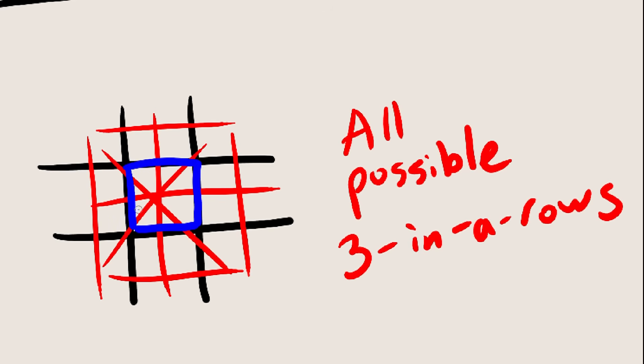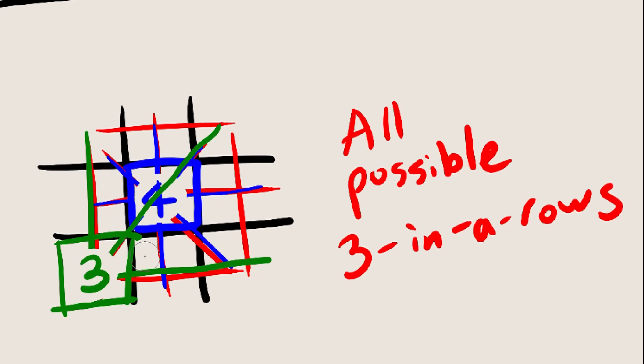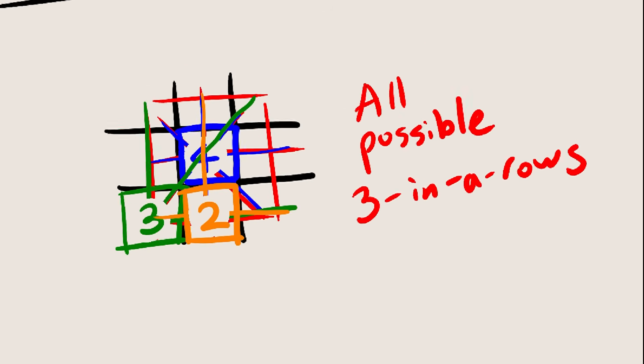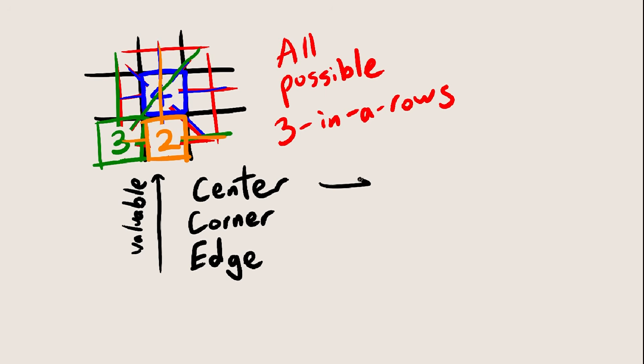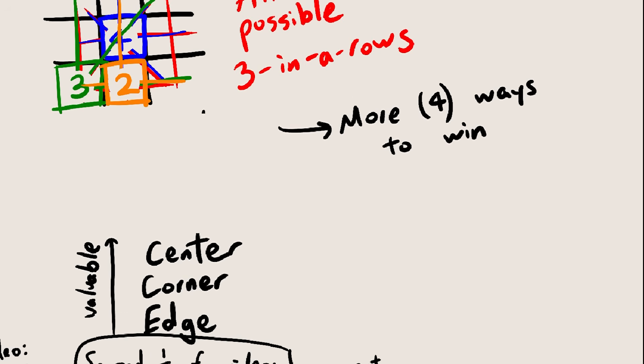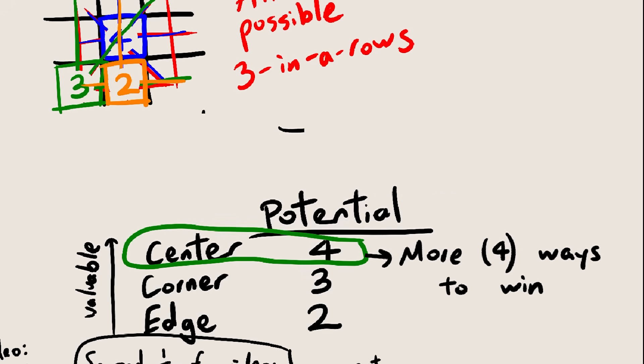So for normal tic-tac-toe, the center has 4 3-in-a-rows going through it, each corner has 3 3-in-a-rows going through it, and each edge has 2. So the center is the most valuable spot, followed by corner, followed by edge. Now this is quite obvious if you think about it, because of course you want to take the spots that have the most winning potential. By the way, let's call the number of 3-in-a-rows the potential of that square. So yeah, center has the highest potential, 4. It gives you more chances to win, so it's the most valuable square.